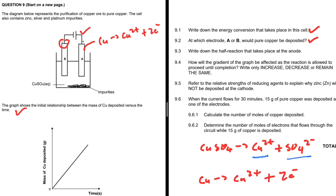The gradient of the graph is not going to change. As oxidation and reduction occur, we're never going to reach a point where the rate at which the mass of copper deposited increases or decreases — the gradient will remain the same throughout until completion.